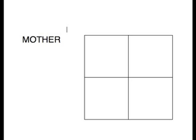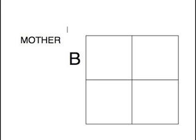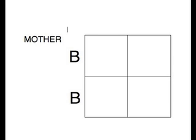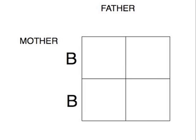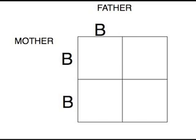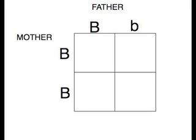A couple wants to find out what color hair their child would have. They start by planning out the mother's genes. Both of her parents had brown hair, and since brown hair is dominant, she's going to have big B, big B. Then they plan out the father's genes. Since his mother had blonde hair and his father had brown hair, he's going to have big B, little b.